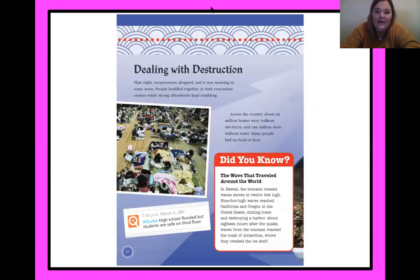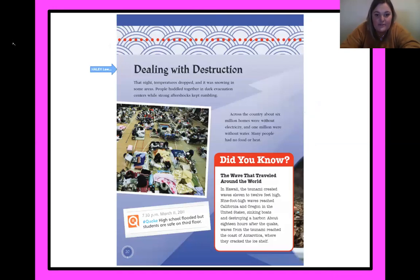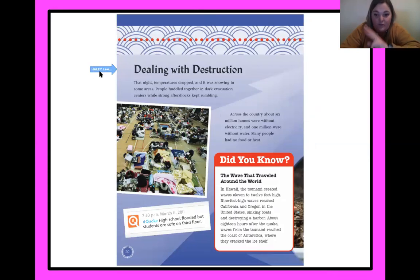All right, let's keep going in the story — 'Dealing with Destruction.' That night, temperatures dropped and it was snowing in some areas. People huddled together in dark evacuation centers while strong aftershocks kept rumbling across the country. About six million homes were without electricity and one million were without water. Many people had no food or heat. Wow, that sounds really hard — can you imagine having no food, no heat, you lost your home, no water?